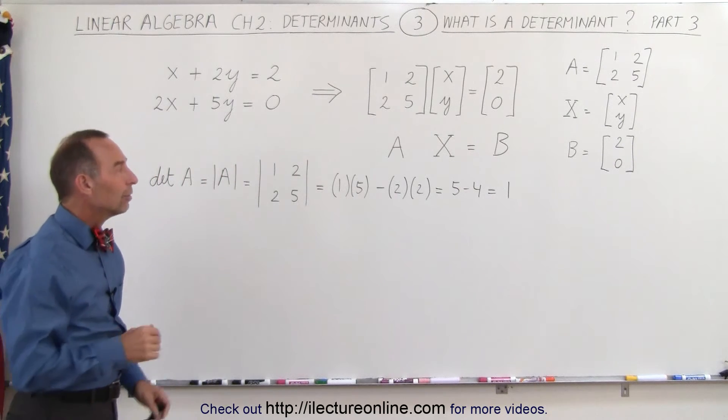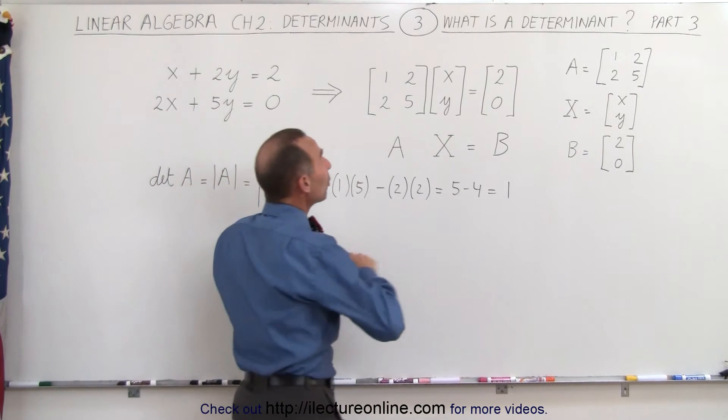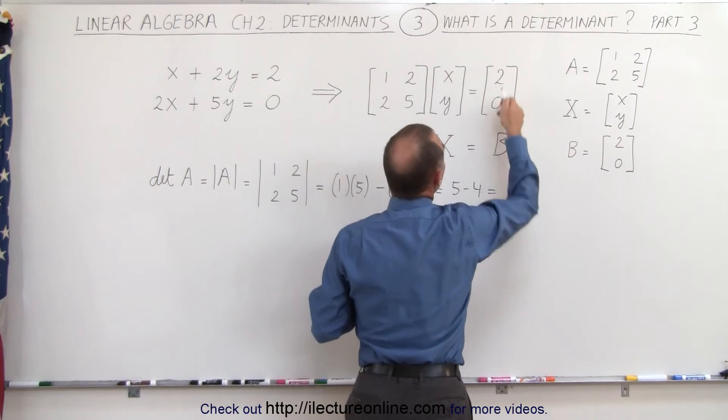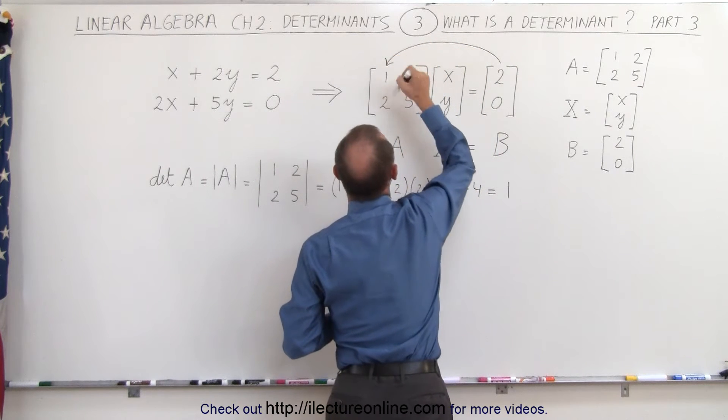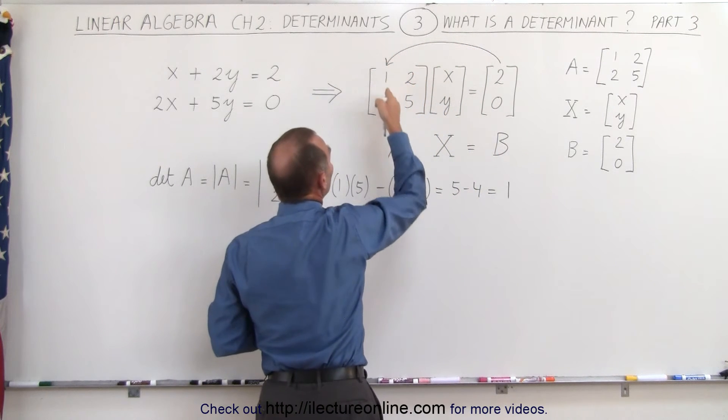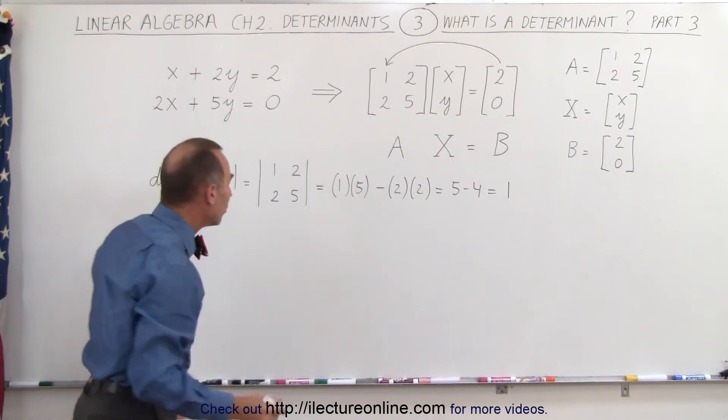Then you will learn, and we'll see an example here, in order to solve that system of linear equations, we take the elements in matrix B and replace the first column (which is 1 and 2 in matrix A) with these numbers. Let's call that matrix A1.